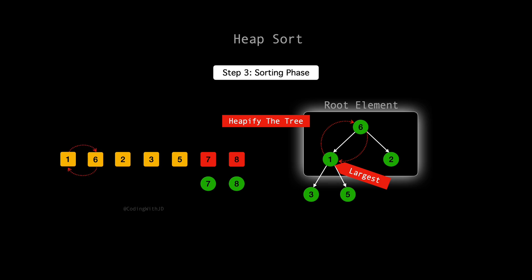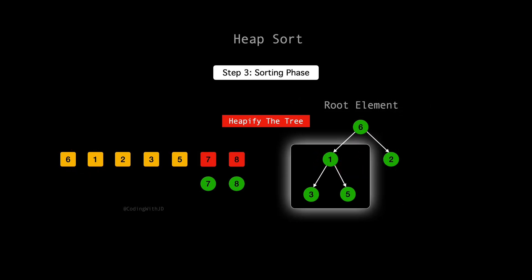Our new heap configuration after the swap is 6, 1, 2, 3, 5. 6 is now the root, and it's appropriately the largest element at this level. However, we need to ensure that the new position of 1 also respects the heap conditions. Comparing 1 with its children 3 and 5, we see that 5 is the larger of the 2. To maintain the max heap structure, we should swap 1 with 5. Our heap is now correctly structured as a max heap again.